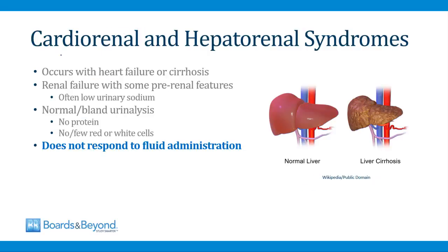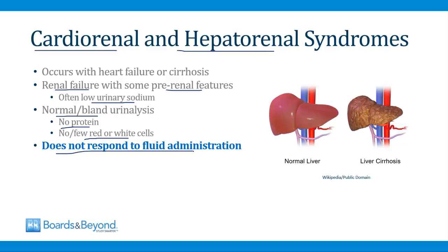Patients who have heart failure or liver disease can develop a type of renal failure that looks just like pre-renal failure. In patients with heart failure, this is called cardiorenal syndrome. In patients with liver disease like cirrhosis, this is called hepatorenal syndrome. In both cases, patients develop renal failure with pre-renal features — often low urinary sodium, and BUN and creatinine rising similarly to pre-renal failure. The main feature that distinguishes these syndromes from pre-renal failure is that they do not respond to fluid administration. The treatment is usually to treat the underlying condition.